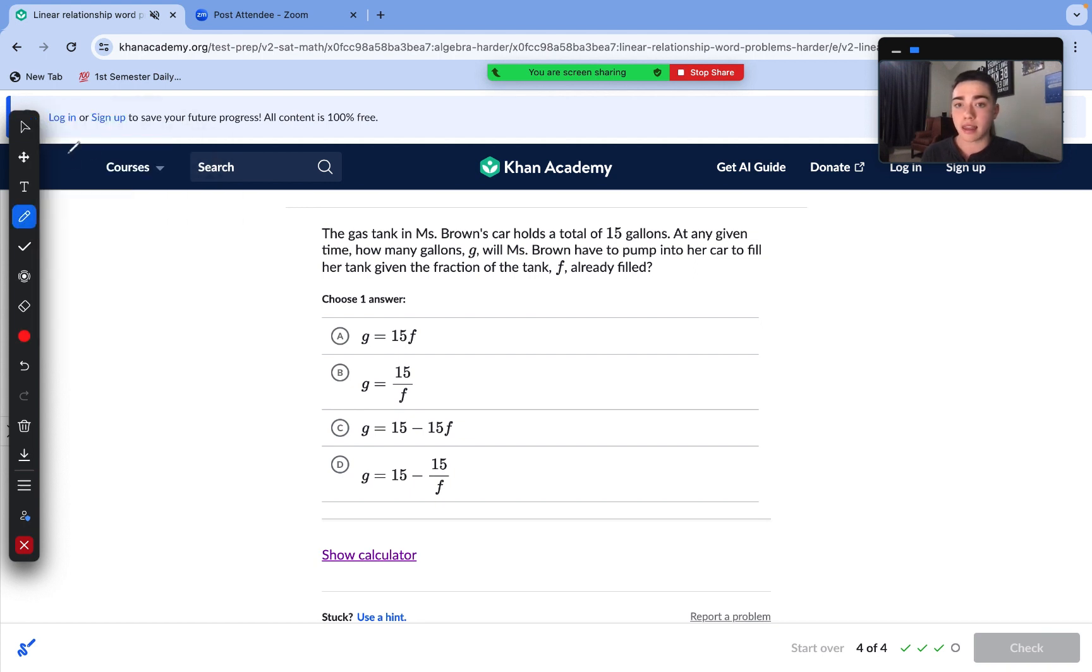Last question. The gas tank in Mrs. Brown's car holds a total of 15 gallons. At any given time, how many gallons will Mrs. Brown have to pump her car to fill her tank, given the fraction of the tank F already filled? So, we just need to think about this quite literally. So, we have a total of 15 gallons. And then at any given time, how many gallons G will Mrs. Brown have to pump her car? So, this G value obviously has to be positive. So, let's figure this out. So, we're going to have a fraction, given a fraction.